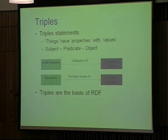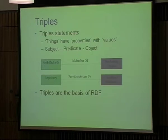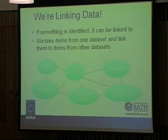The basis of it is these things called triples. Just giving you a couple of examples — it's quite a simple, logic-based notion. For example, Keith Richards is a member of the Rolling Stones — subject, predicate, object form. That's basically the backbone of RDF, though it's a complex area.